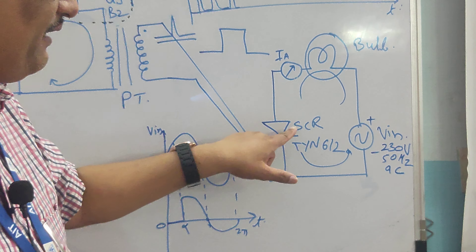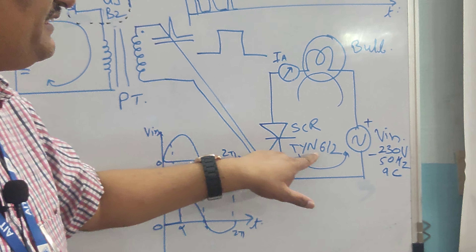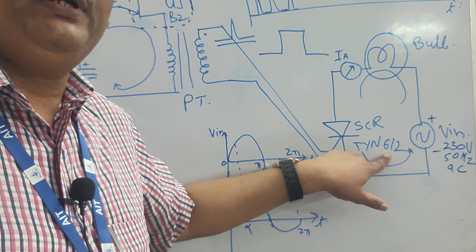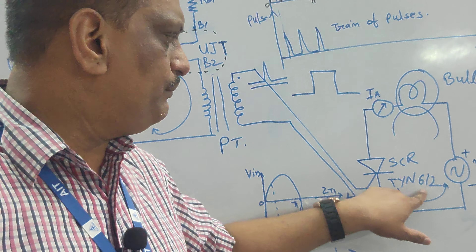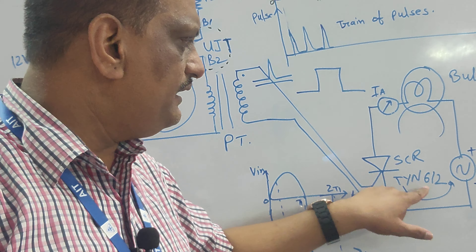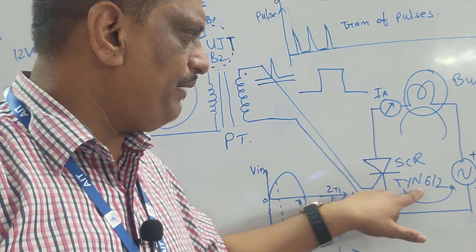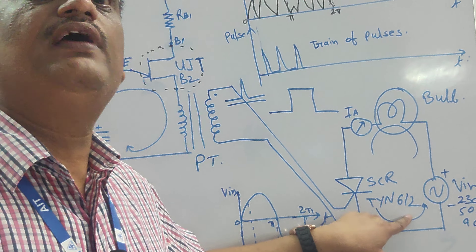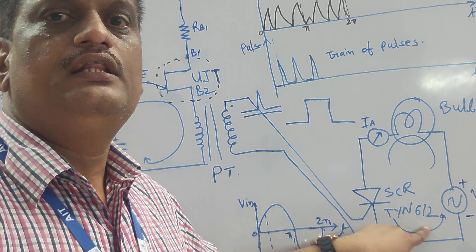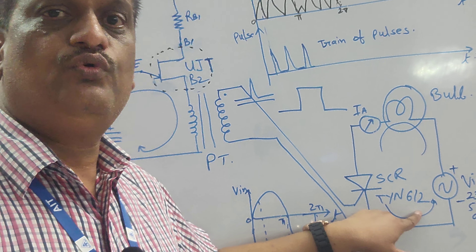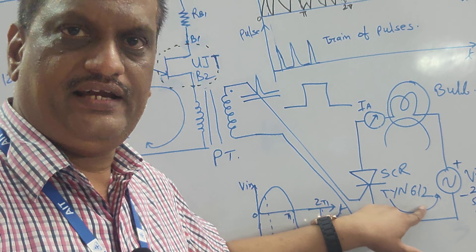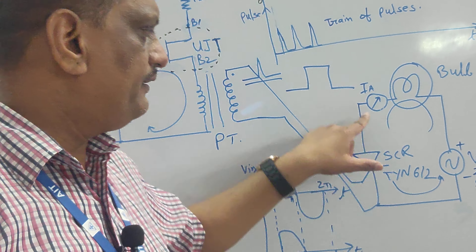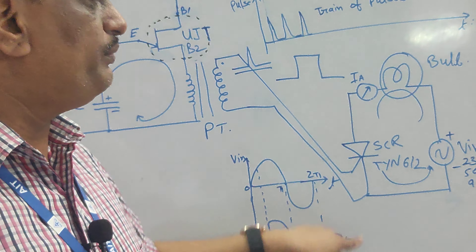The SCR used here is TYN612. TYN612 is an SCR from the transistor family, having a 600 volt and 12 ampere current rating. So the maximum voltage and current rating is indicated by 612, and that is the rating of this SCR.